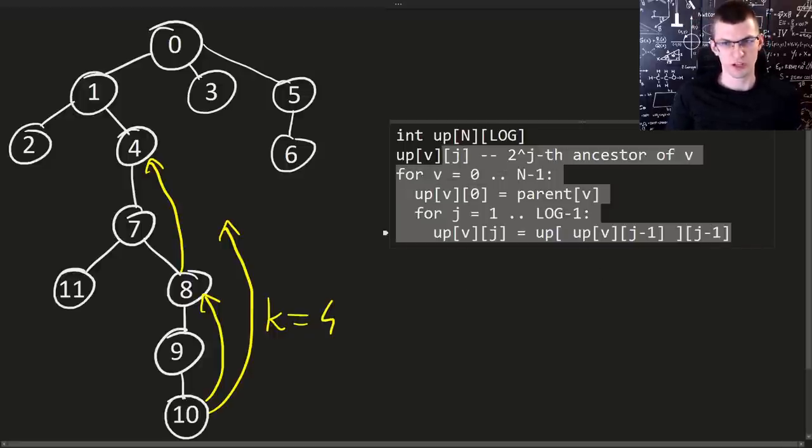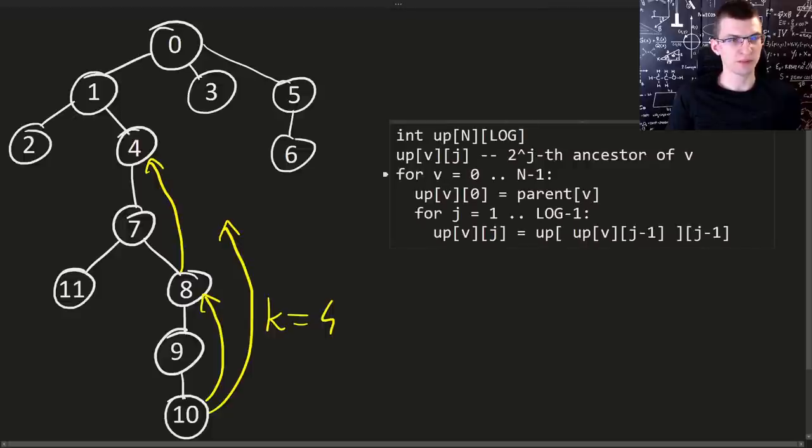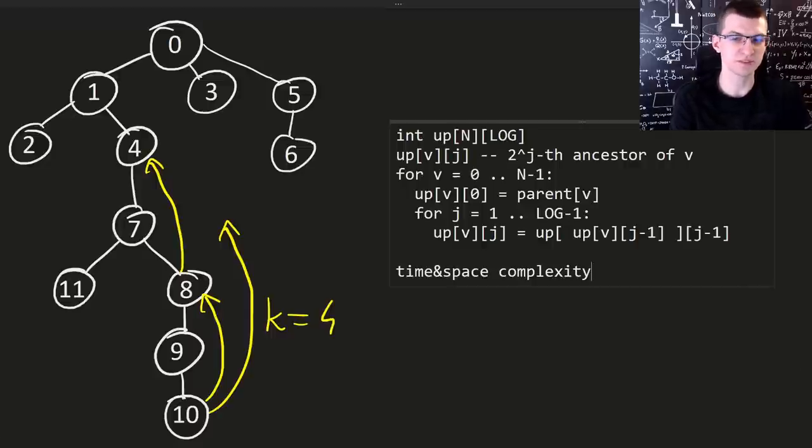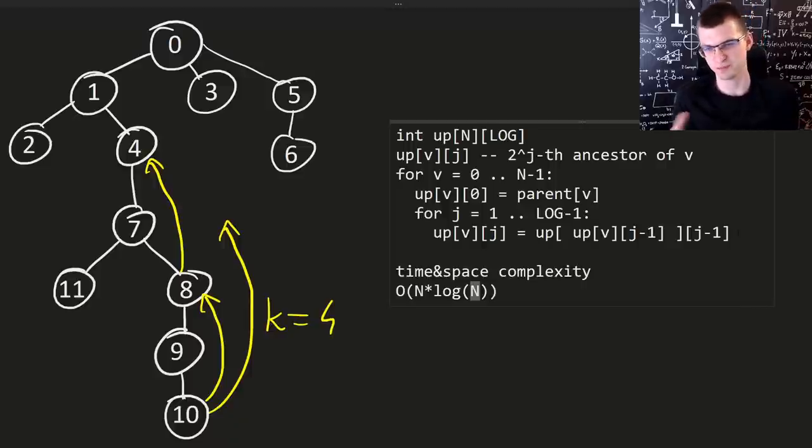And we have n times logarithm complexity of preprocessing. Obviously we have two for loops. So it's n times logarithm. I will write it down. This is both time and space complexity because we create this kind of big array. Sometimes the space complexity is an issue and maybe even you want to do brute force instead. There is often a trade-off between time and space complexity. Here both time and space are n times log of n. Or actually log of depth of the tree. If the tree is balanced then it's better but actually then even brute force becomes very fast.